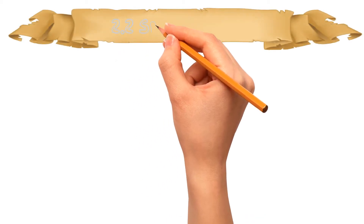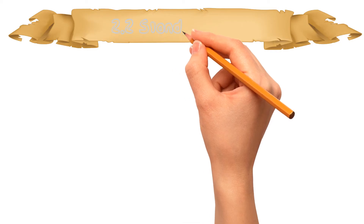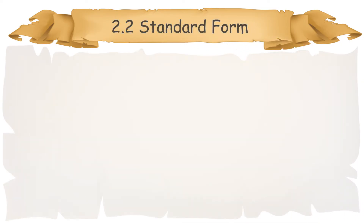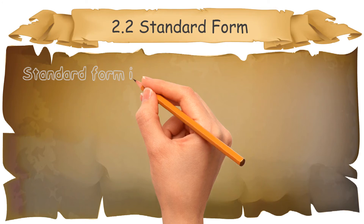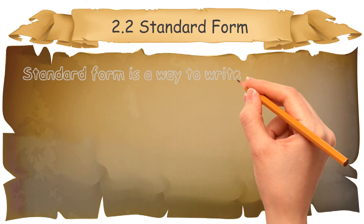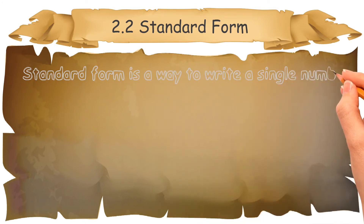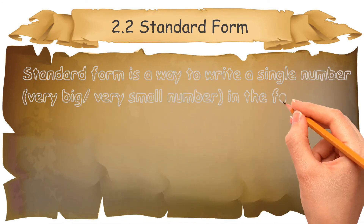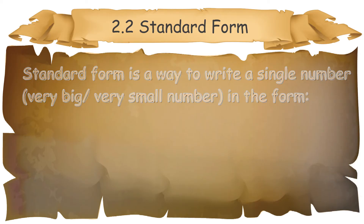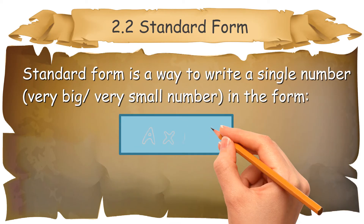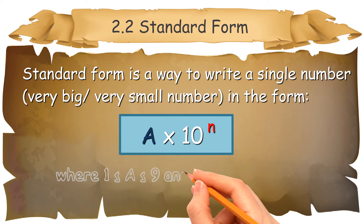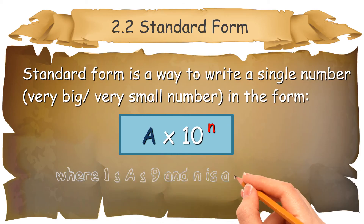Now let's move on to 2.2 Standard Form. Standard form is a way to write a single number — very big or very small — in the form A × 10^N, where A is a digit between 1 and 9 inclusively, and N is an integer.